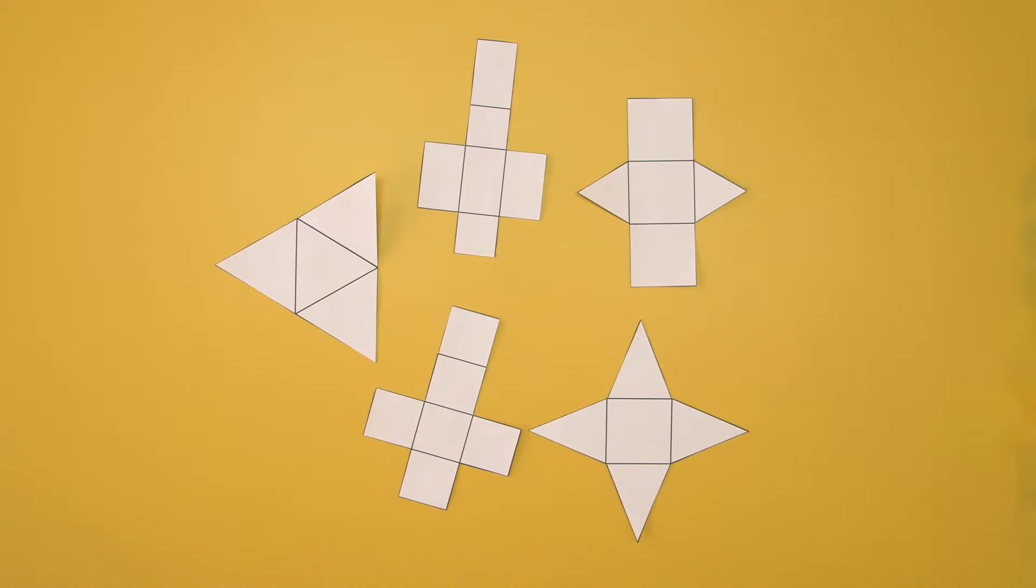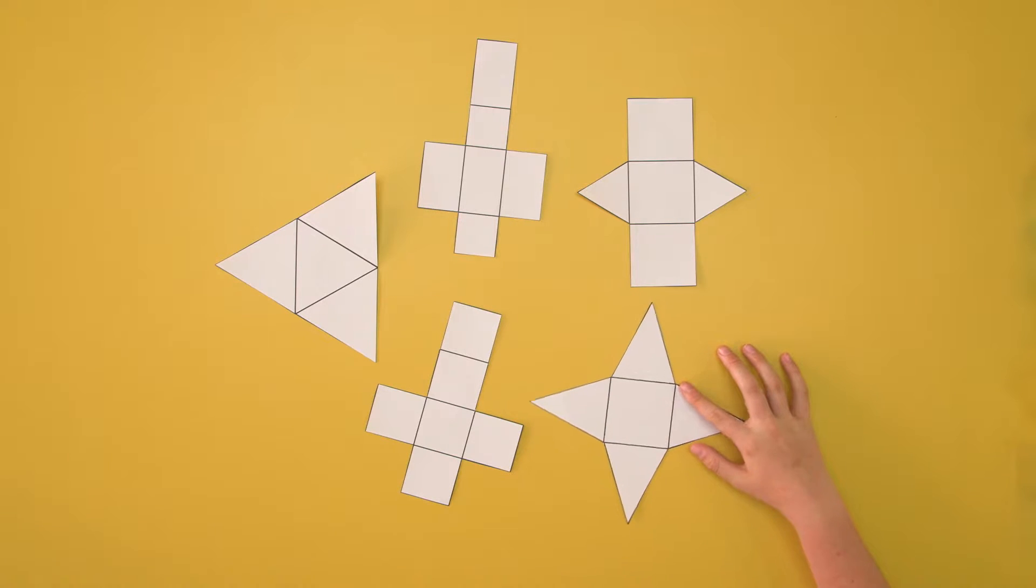Let's look at the difference between these nets. I can say this one is made up of just squares. This one is made up of four triangles and one square.